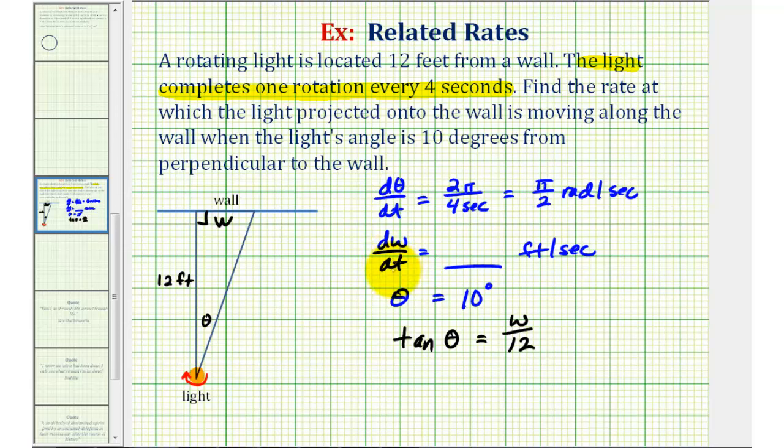And now to find dw dt, we'll differentiate both sides of this equation with respect to t. Notice because we're differentiating with respect to t, not theta or w, we'll have to perform implicit differentiation. Let's go ahead and do this on the next slide.